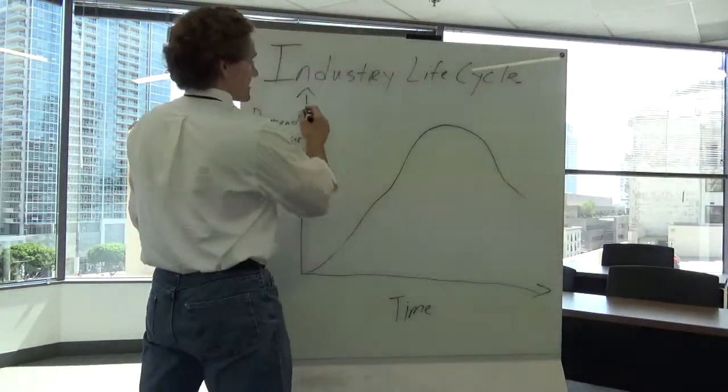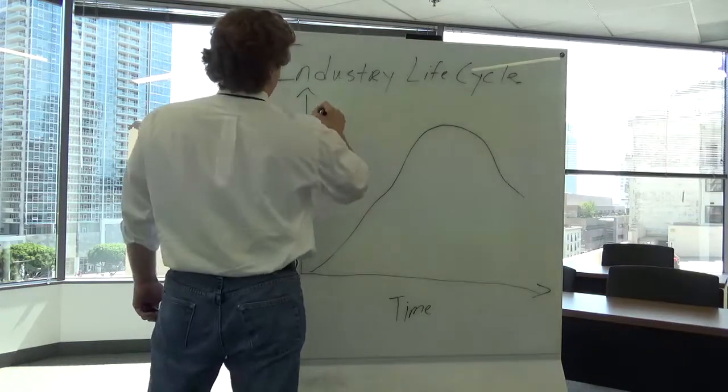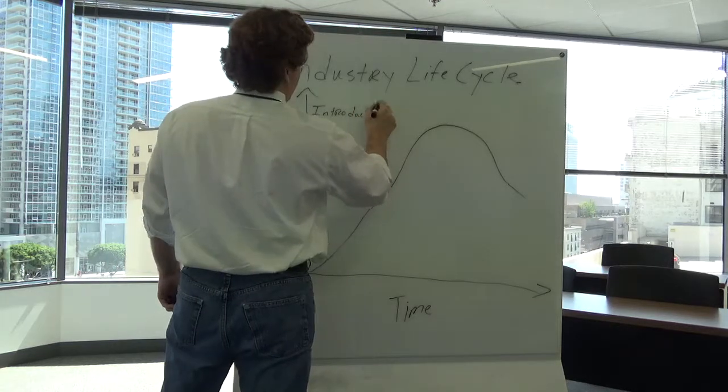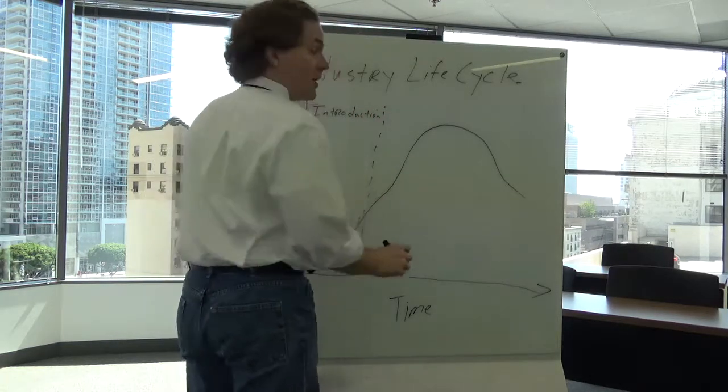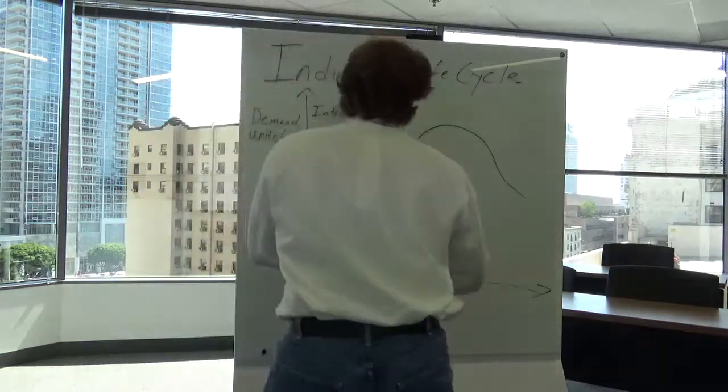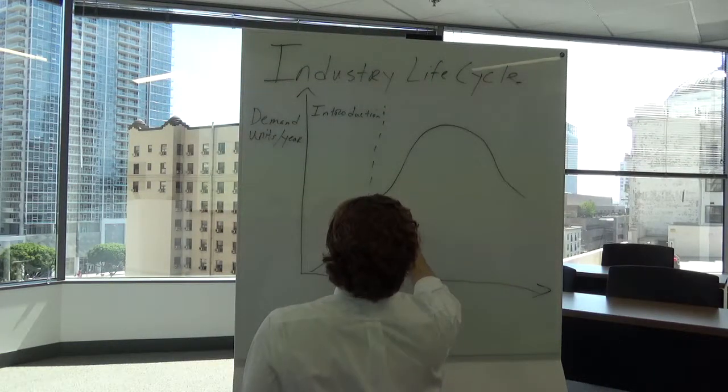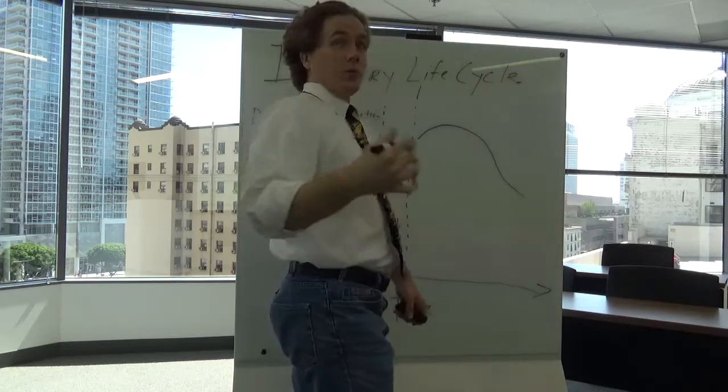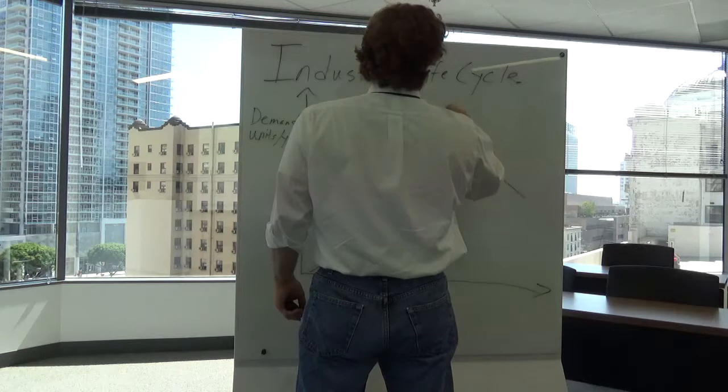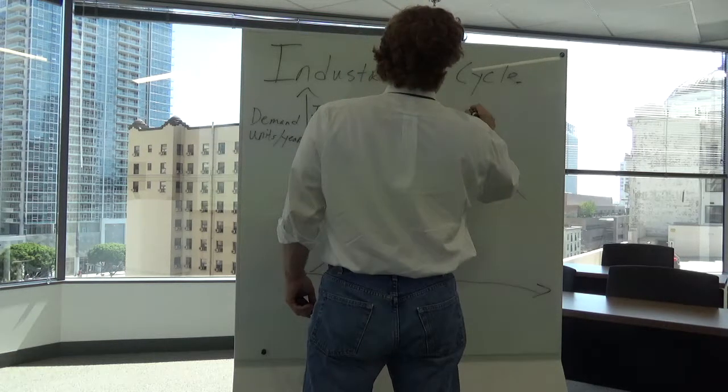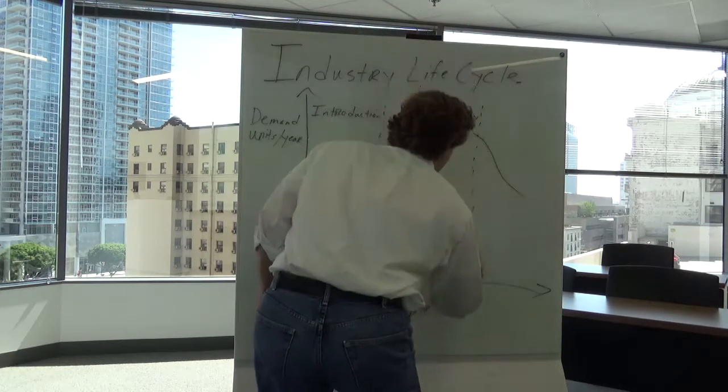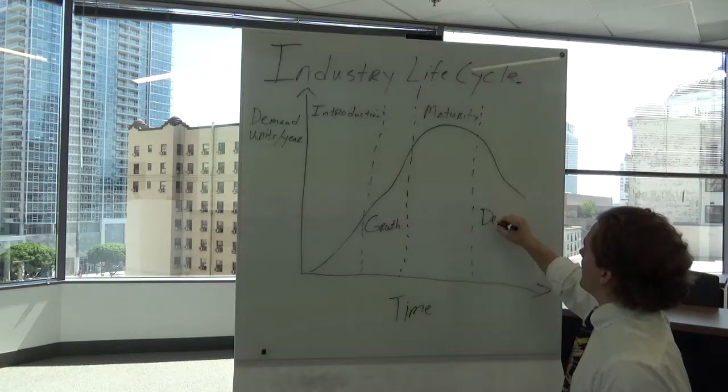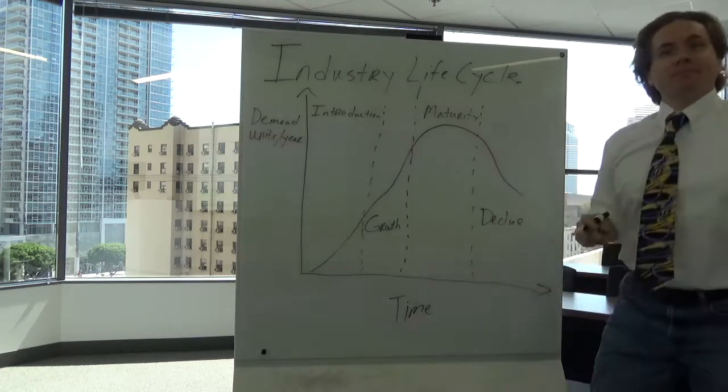And so we have different terms for these stages. We talk about growth. We describe maturity. And then we talk about decline.